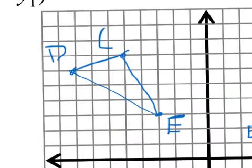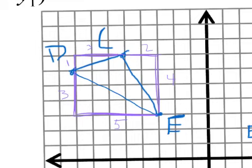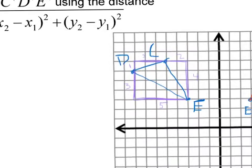For each side, instead of using the actual distance formula, we can count the boxes. For side DC, I box it off and get a 1 by 3 rectangle, so DC equals the square root of 1² + 3², which is the square root of 1 + 9 — the square root of 10. For CE, I box it off and get 2 by 4, so CE equals the square root of 2² + 4², giving square root of 4 + 16 — the square root of 20.